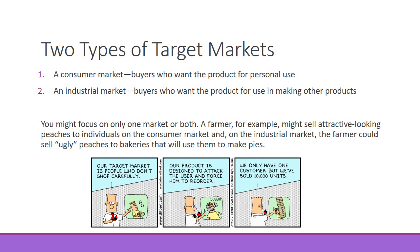You might focus on only one market or both. A farmer might sell attractive-looking peaches to individuals on the consumer market. On the industrial market, the farmer could sell the ugly peaches to bakeries that use them to make pies. That's the standard practice for most large farms. There's also a Dilbert cartoon here: 'Our target market is people who don't shop carefully. Our product is designed to attack the user and force them to reorder. We have only sold to one customer, but he's bought 10,000 units.'